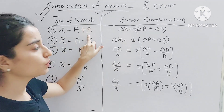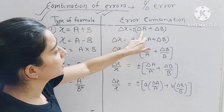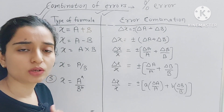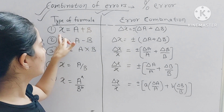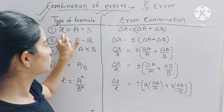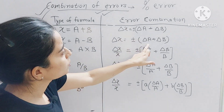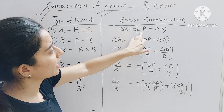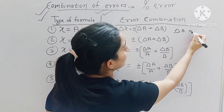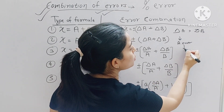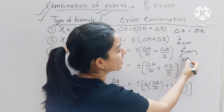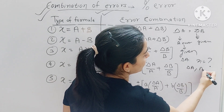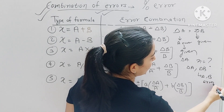The first case is x = a + b. In this case, the percentage error is: Δx = ±(Δa + Δb). We have three parameters: x, a, and b. The error Δa and Δb will be given in the question. For example, a value like '6 ± 0.06' means A = 6 and ΔA = 0.06. So we simply put the values and calculate.